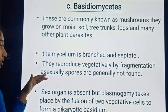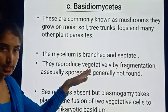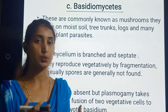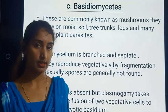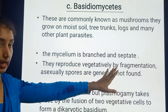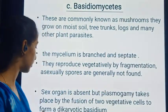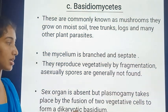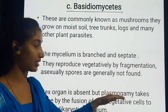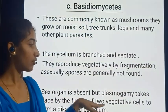They reproduce vegetatively by fragmentation, where the mycelium breaks down into many pieces and each piece develops into a single new young fungus. Asexual spores are generally not found in Basidiomycetes. The sex organ is absent, but plasmogamy takes place by the fusion of two vegetative cells.